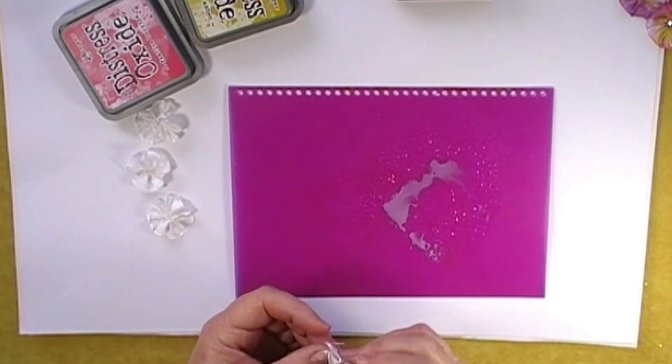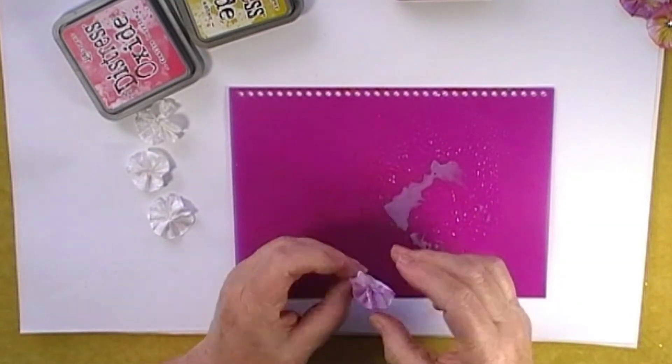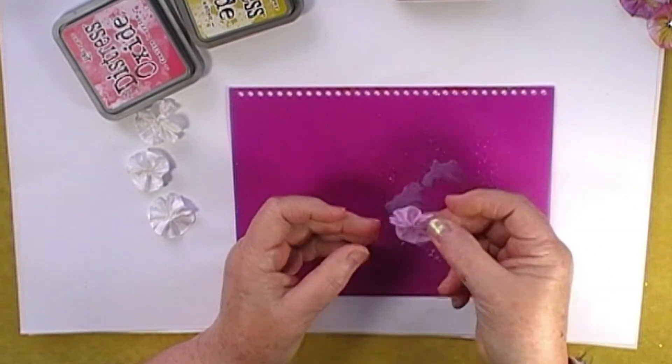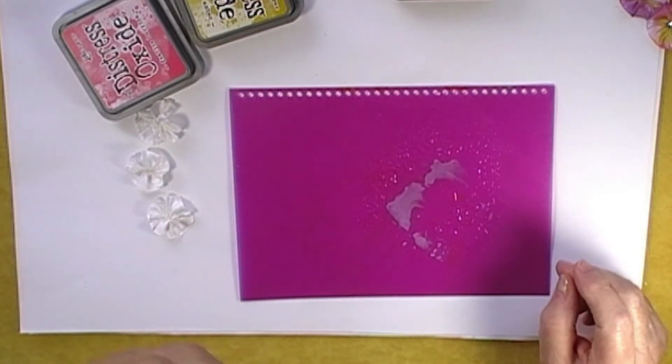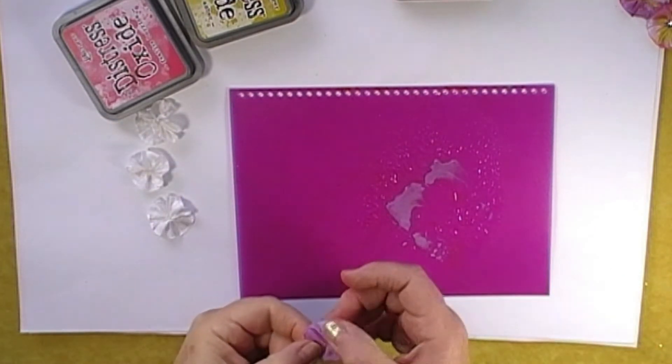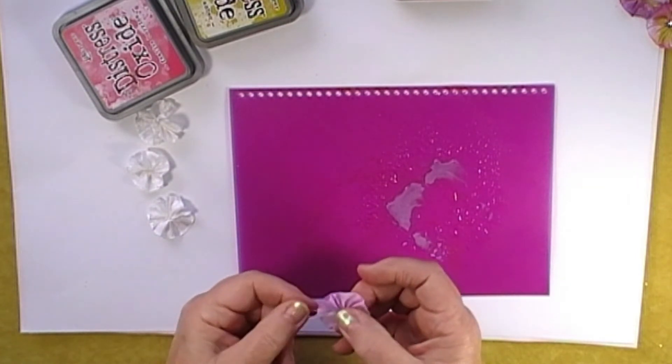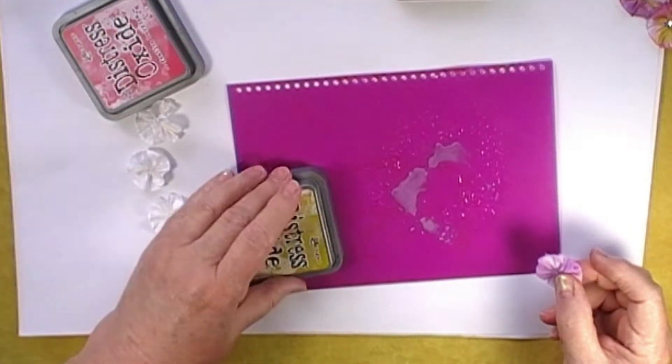And then just kind of dip it in like that. You can see there's a little bit of color on there. And because it's wet now it will soak in and cover the whole flower or almost cover the whole flower.